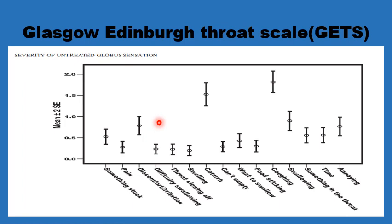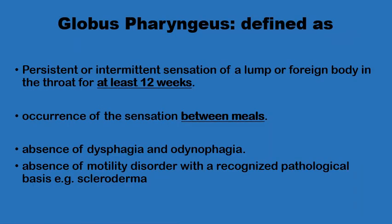The average globus patient would score high for frequent attempts at clearing the throat by coughing or swallowing, a sense of catarrh in the throat, or discomfort in the throat. On the other hand, they will score very low for difficulty in swallowing, a throat closing up, swelling in the throat, or pain in the throat. Empirically, a patient may be categorized as having globus sensation if they have this intermittent sensation of a lump or foreign body in the throat for at least 12 weeks, present between meals, excluding dysphagia, odynophagia, or GI motility disorders like scleroderma.